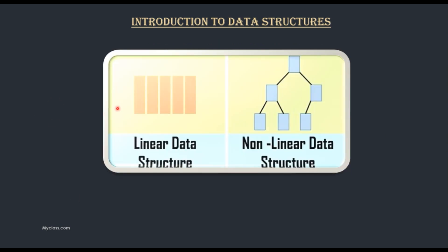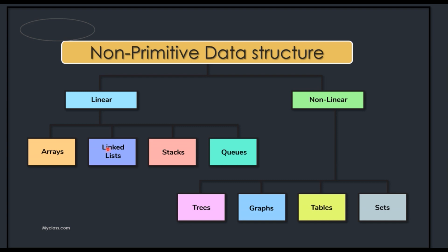Linear data structure looks like this and non-linear data structure looks like this. So, these are the examples of linear data structures: Arrays, linked lists, stacks and queues.